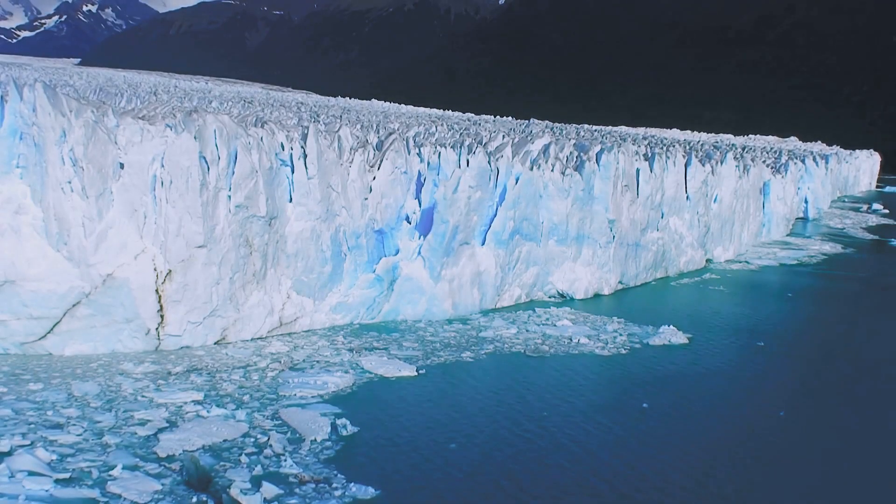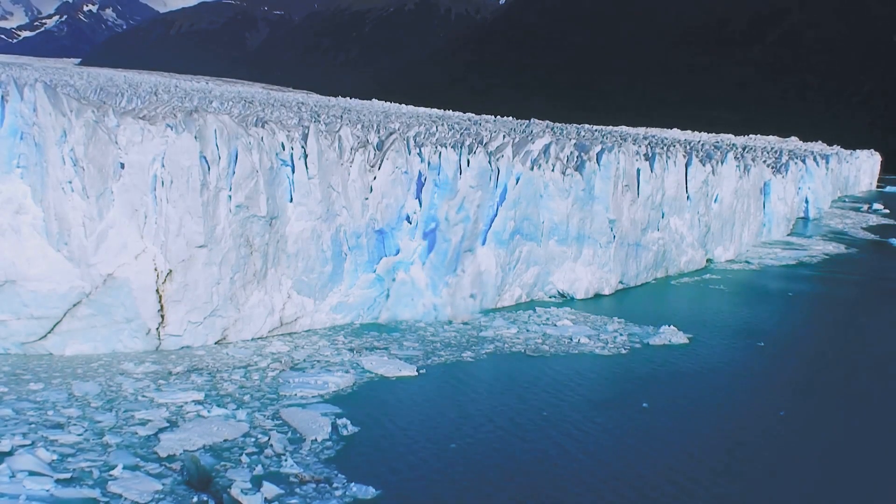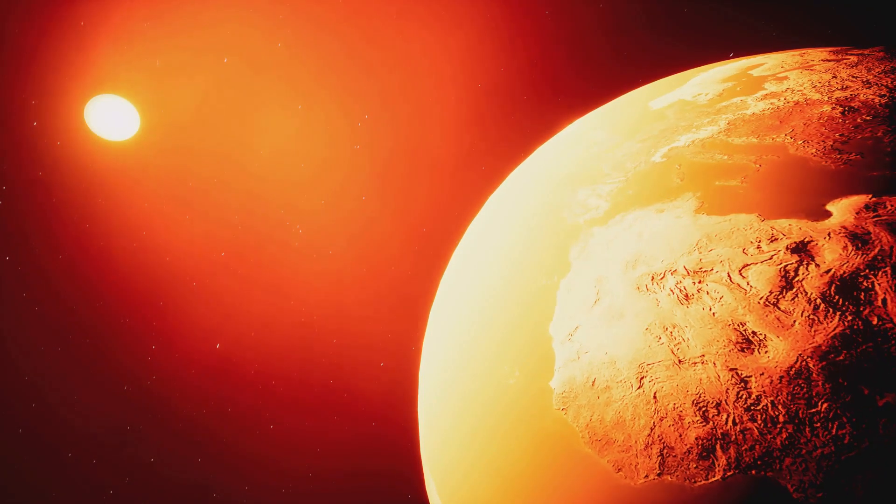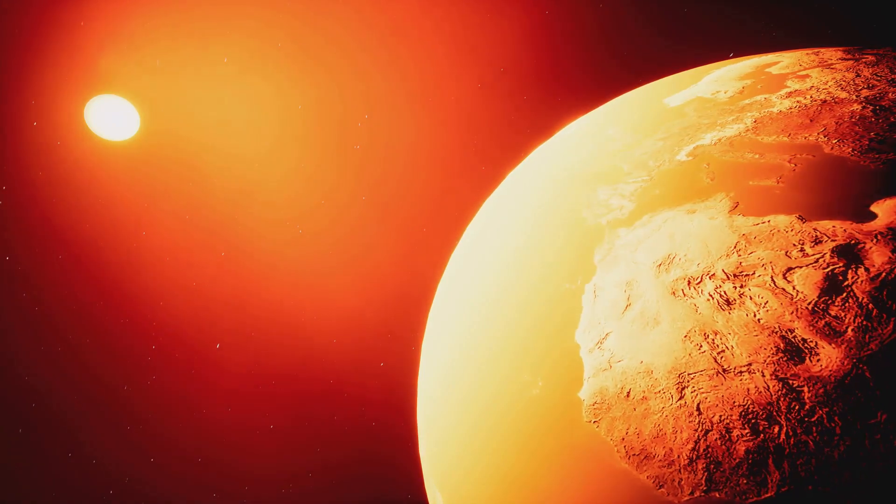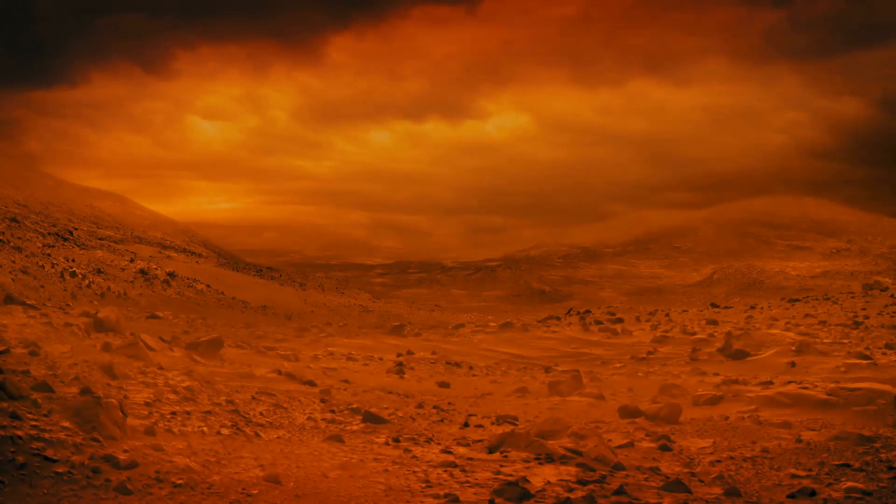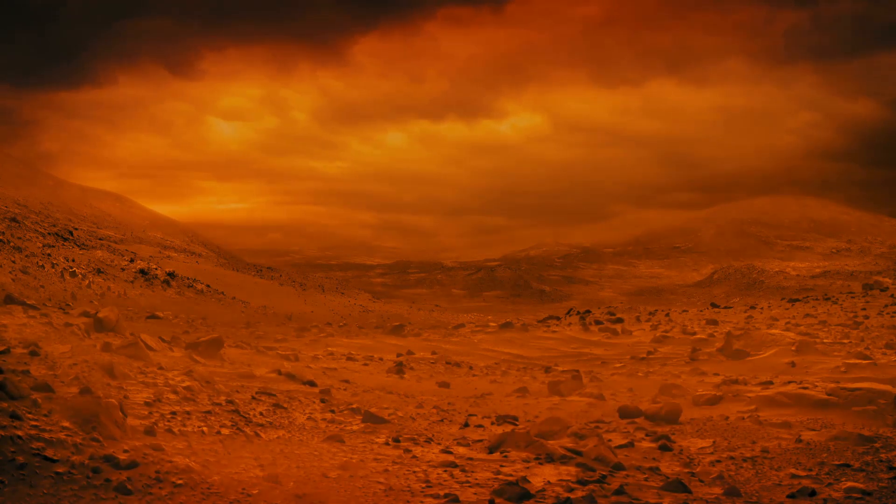This increase in solar radiation will have a significant impact on Earth's climate. Temperatures will rise, causing polar ice caps to melt at an accelerated rate, leading to a rise in sea levels. Coastal regions could be submerged. However, over a billion years the more pressing issue will be a runaway greenhouse effect making Earth uninhabitable. The once familiar landscapes of our planet could be transformed into something entirely different.